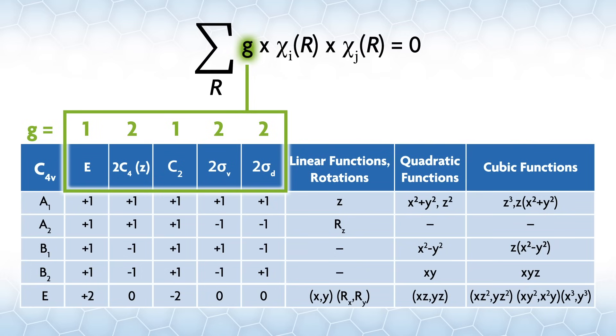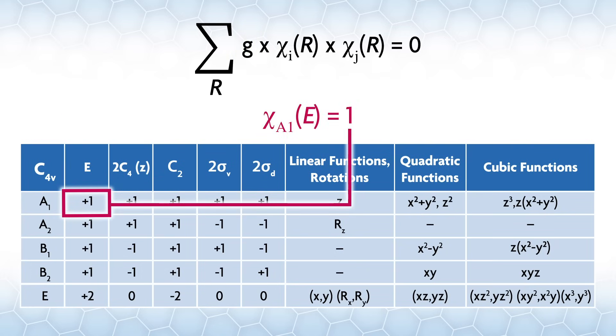First, what is g? It's the number of operations in the class, so the coefficient for the class. We will often use the Greek letter chi for a character. The equation has chi IR and chi JR.